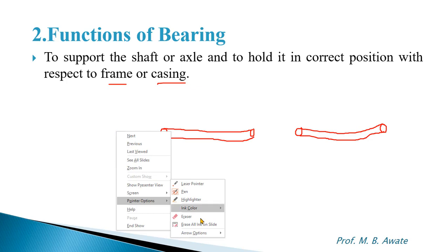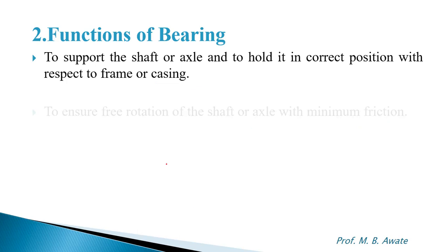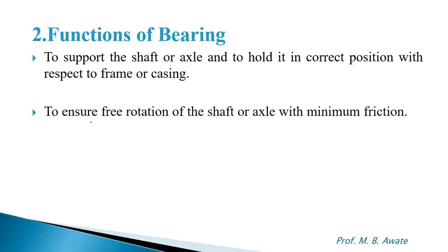The second function is very important: it ensures the free rotation of the shaft or axle with minimum friction. As there is free rotation, there is less friction. So the second function of the bearing is that it ensures the free rotation of the shaft or axle with minimum friction.